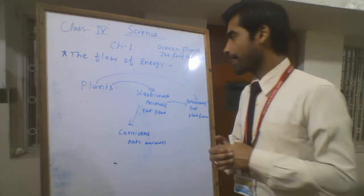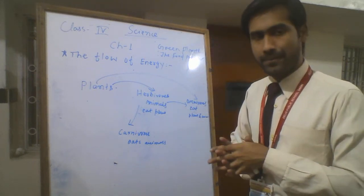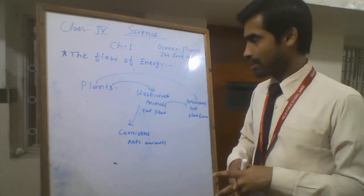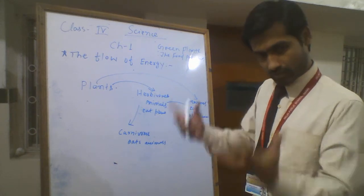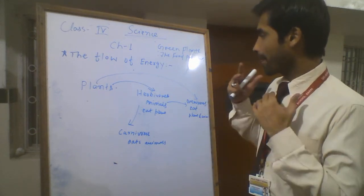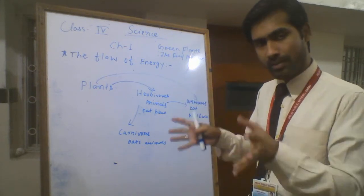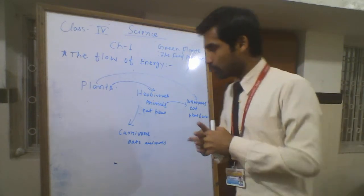We provide carbon dioxide to plants. This way, we are interdependent to each other. Plants give us oxygen and we give them carbon dioxide. This is how we are interdependent.